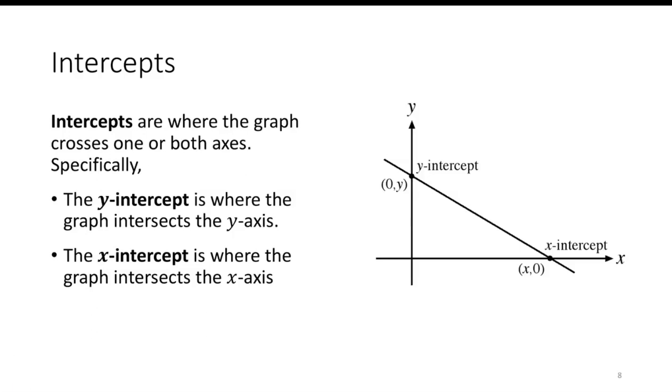Intercepts are where the graph crosses one or both axes. Specifically, the y-intercept is where the graph intersects the y-axis, and the x-intercept is where the graph intersects the x-axis.